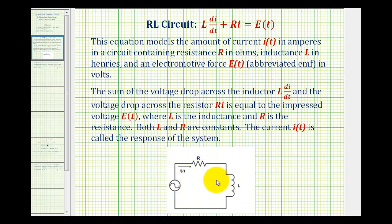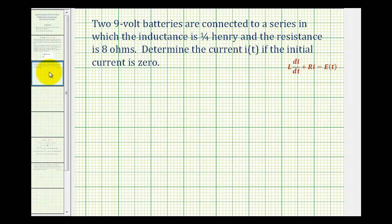Let's take a look at our example. Two nine-volt batteries are connected in series in which the inductance is one-fourth Henry and the resistance is eight ohms. We want to determine the current i of t if the initial current is zero.